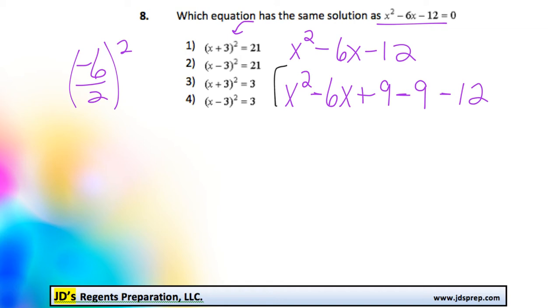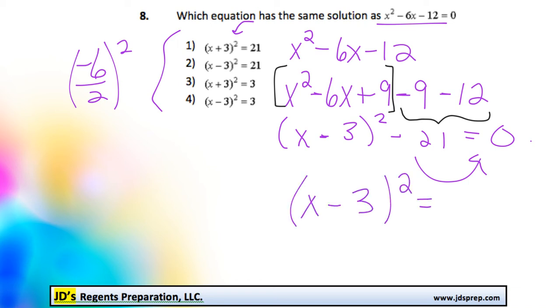And we did that so that we can take this section, a perfect square trinomial, and factor it. It would become x minus 3 squared. And then we can combine this minus 9 and minus 12 together to get minus 21. And then, of course, this is all still equal to 0. And what they've done over here is they've moved the 21 over to the other side of the equation. So we'd get x minus 3 squared equals 21. And we can see that matches solution number 2.